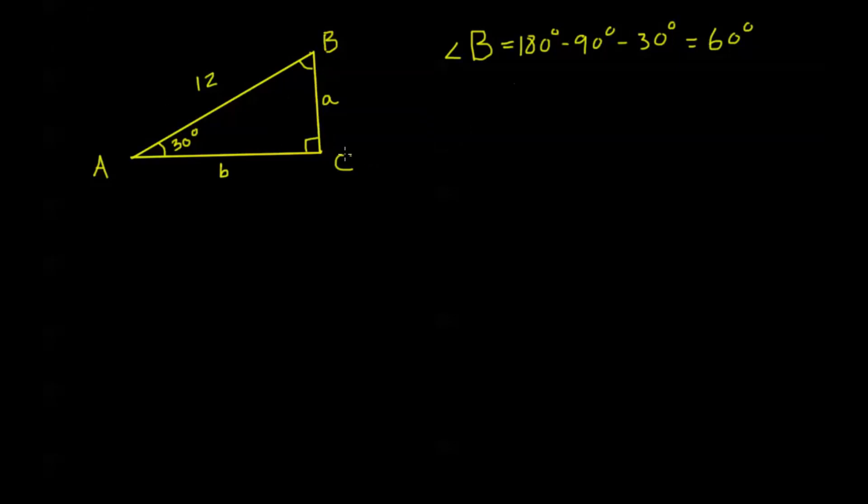Now, I have my hypotenuse, so I'm going to be looking at parts of SOHCAHTOA that use my hypotenuse, so I'm not left with two unknowns. For example, if I choose tangent here, if I say tangent of 30 degrees is a over b, well I'm not going to be able to solve either a or b because I have two unknowns, I can't solve them at the same time. So I want to set up equations using SOHCAHTOA that only has one unknown variable.